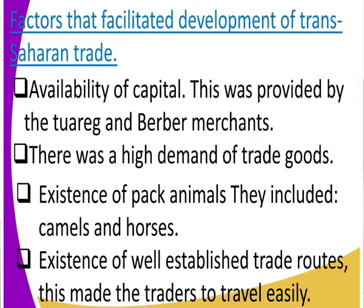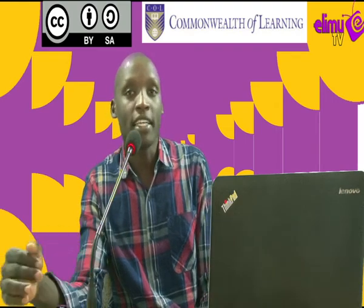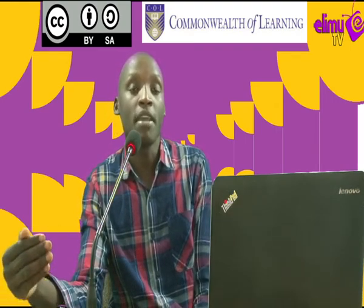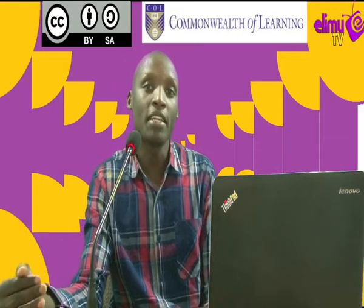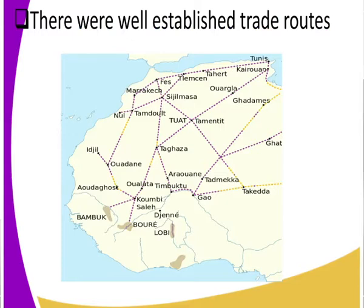Let us look at the factors that facilitated the development of trans-Saharan trade. There were a number of factors, but we'll look at some of the main ones. First, there were well-established trade routes. From our diagram, you can see and point out a number of centers. Those centers marked in dots or in bold were the trade routes that they used. For example, you can note Zijilmasa as a center.